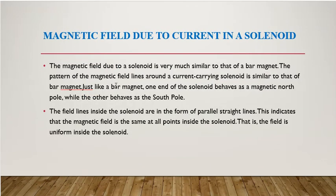Now, magnetic field due to current in a solenoid. When we pass current through a solenoid, it behaves as a magnet, similar to a bar magnet. Let's see how the magnetic field due to current carrying in a solenoid looks. The magnetic field due to a solenoid is very much similar to that of a bar magnet.